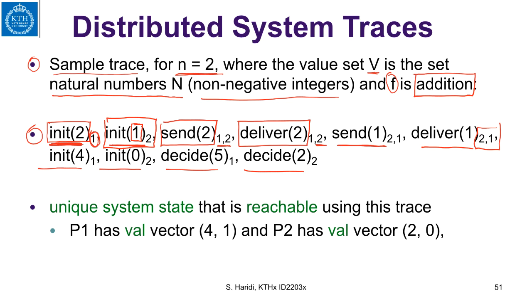So these are the events happening in the system. And in fact, after execution of this trace, you get a unique system state. And that system state has the following values. At p1, its val vector will have these values, and at p2, its val vector will have these values.